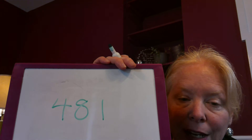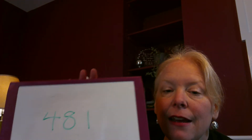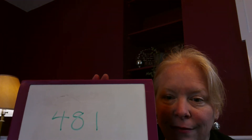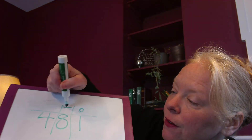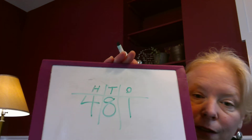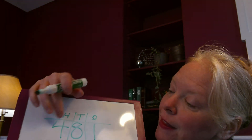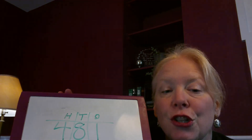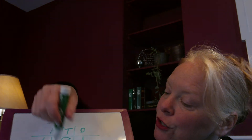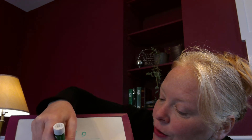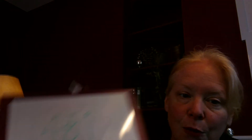Here's the number 481. If I asked you to add two hundreds, you could use your chart with labels and find the hundreds column. You add two to that digit — the 4 becomes a 6 — and you keep the other numbers the same. Your new number is 681.